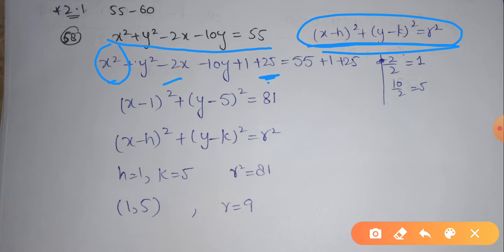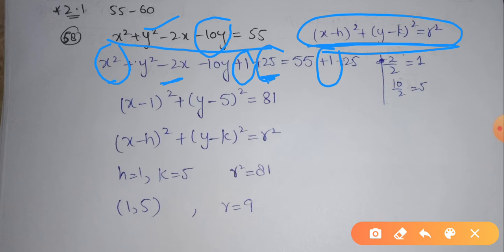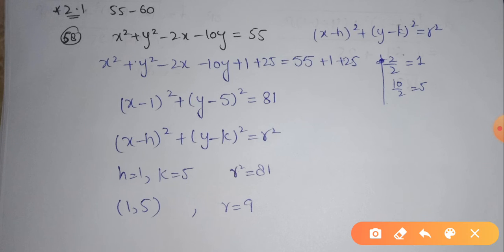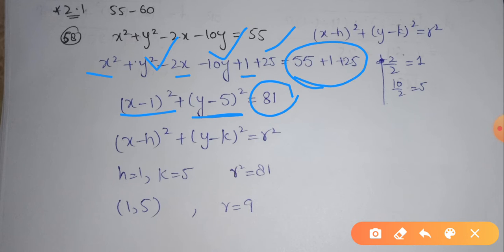For the X terms: dividing the coefficient of X, which is 2, by 2 gives B equals 1. So we add 1 squared on both sides to balance the equation. For the Y terms: the coefficient of Y squared is already 1. The coefficient of Y is 10, so dividing by 2 gives 5. We add 5 squared equals 25 to both sides to balance the equation. Now X squared minus 2X plus 1 becomes (X minus 1) whole square, and Y squared minus 10Y plus 25 becomes (Y minus 5) whole square.